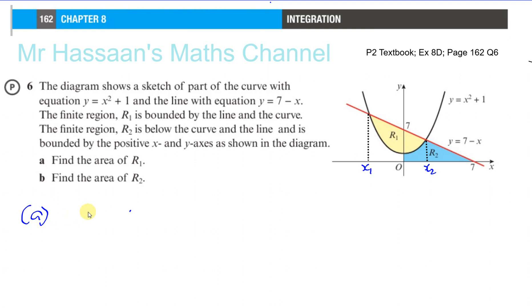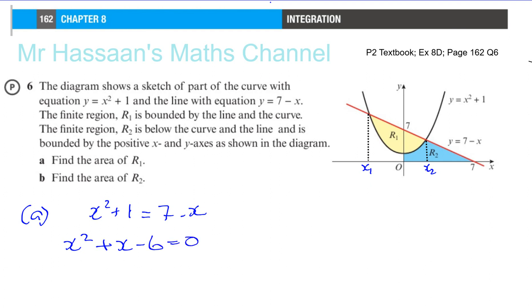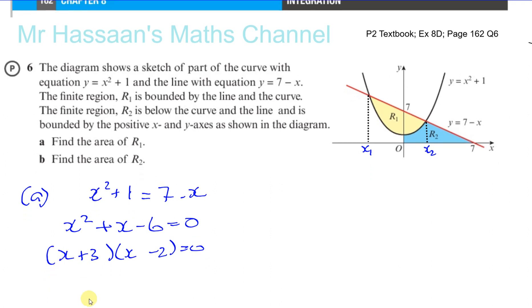The line and the curve intersect when the two equations are equal. We solve them simultaneously. Because they're both in terms of y, they intersect when x squared plus 1 equals 7 minus x. This gives the quadratic x squared plus x minus 6 equals 0. Factorizing: plus 3 and minus 2, so x equals minus 3 and x equals 2.